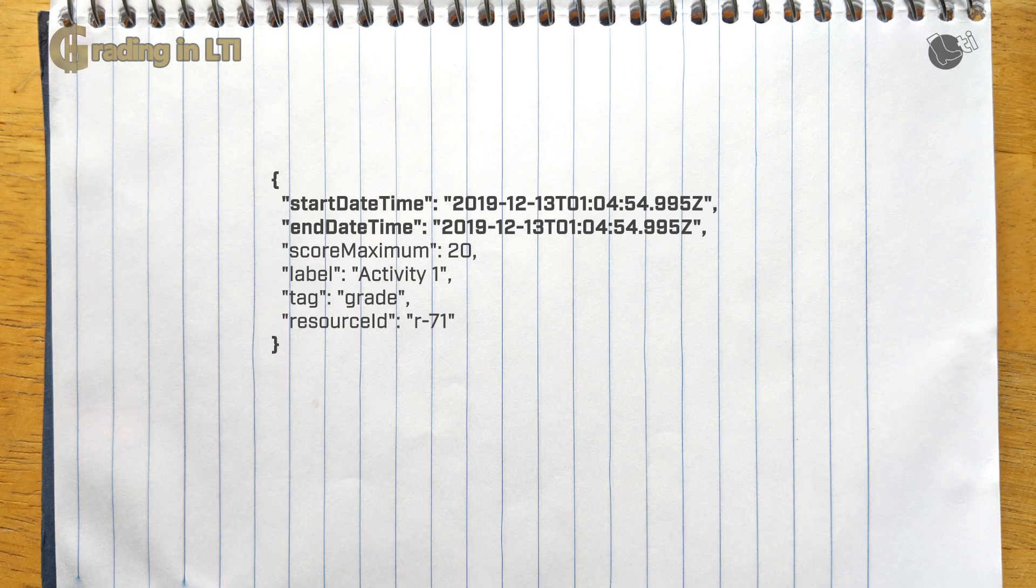Another element I have not mentioned yet is that you can pass dates when you create a line item. So for example, you will indicate the submission date for an activity, what is the due date. As usual, this information may actually be overridden by the instructor in the LMS.